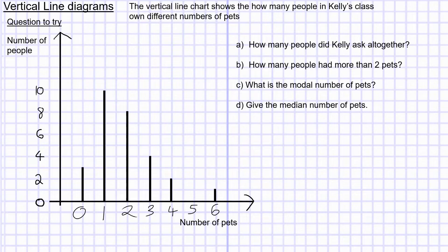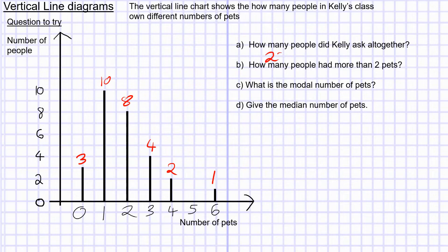Here are the answers. For how many people Kelly asked altogether, we just need to look at the heights of all the bars. Three people had zero pets, ten had one, eight had two, four had three, two had four, no people had five pets, and one person had six. Adding up these heights: 3 plus 10 plus 8 plus 4 plus 2 plus 1 equals 28. So she asked 28 people.